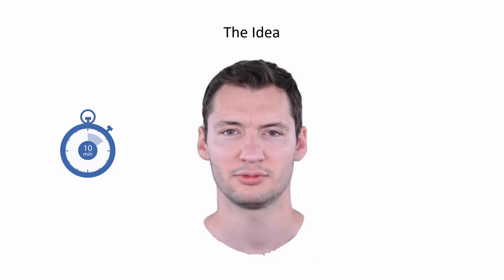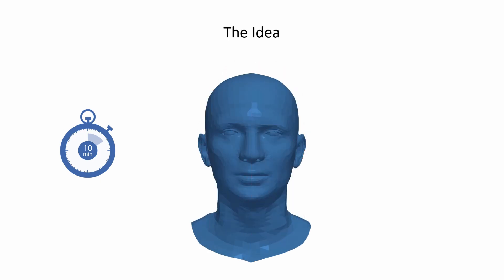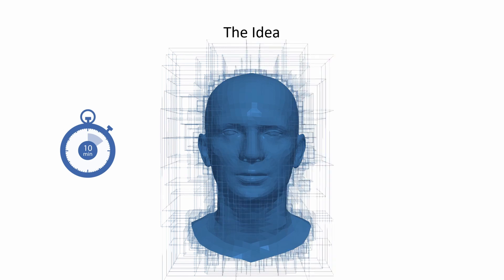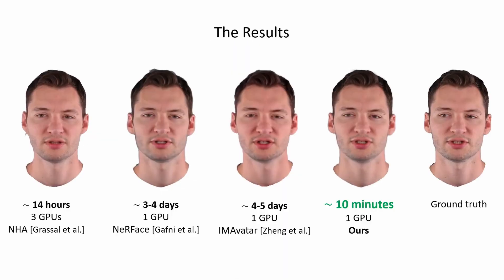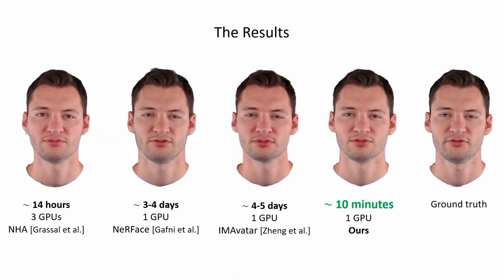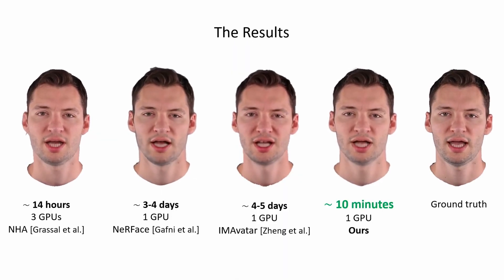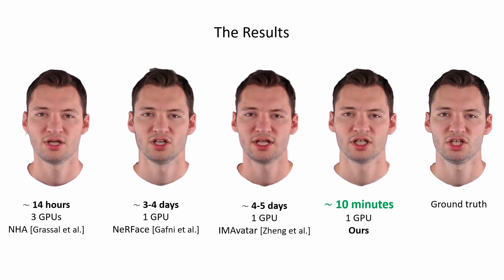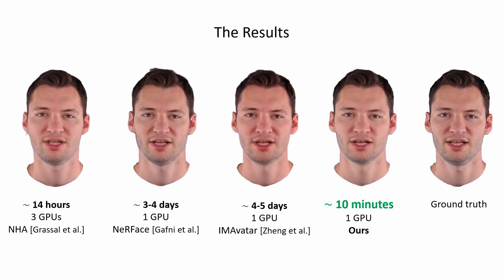To achieve it, we construct a deformable radiance field embedded around a parametric phase model, where the space is encoded using a multi-resolution hashing grid. Our method achieves better quality and expressiveness while being orders of magnitude faster to train on the same input data compared to the current state-of-the-art solutions.